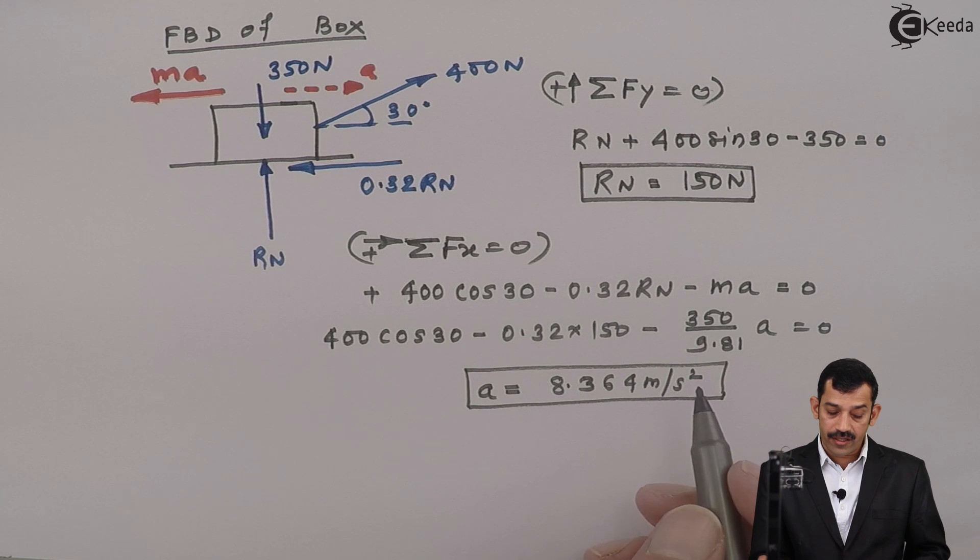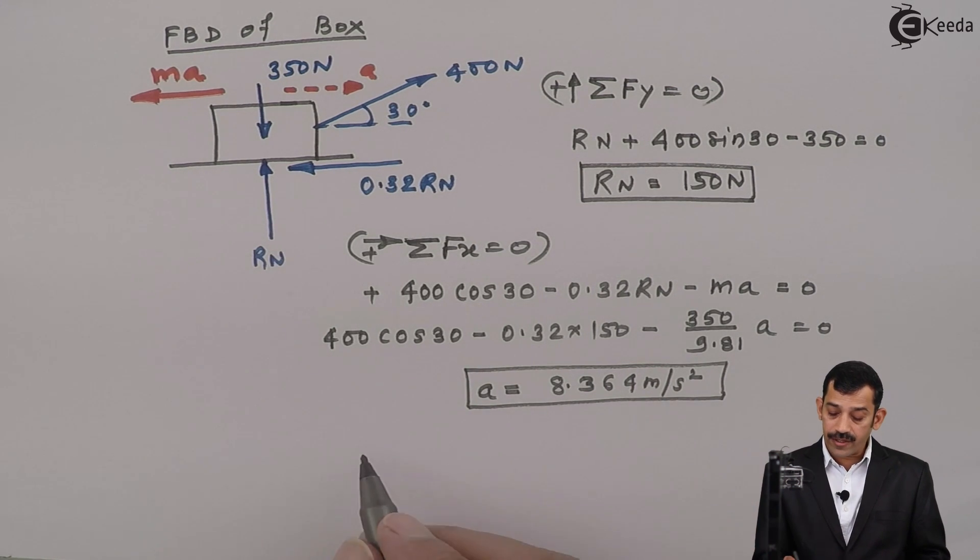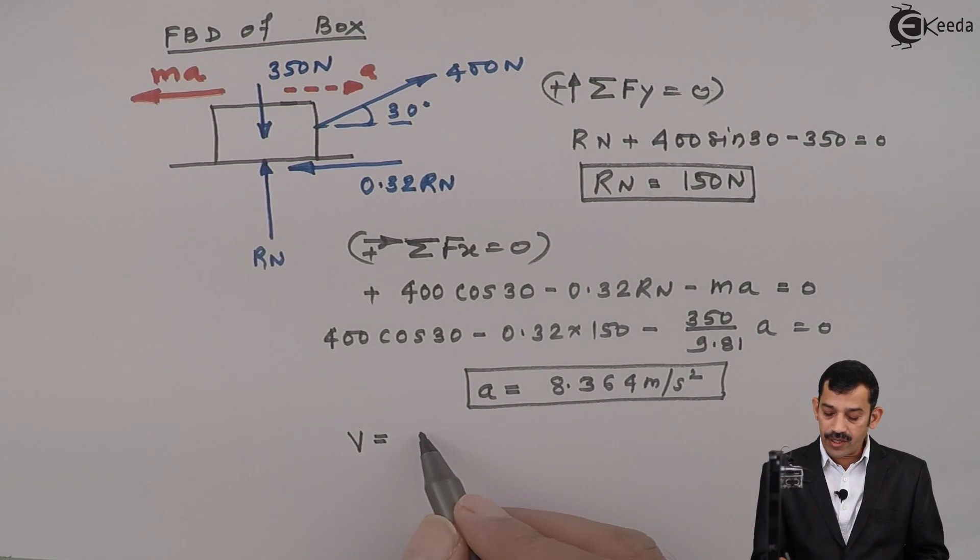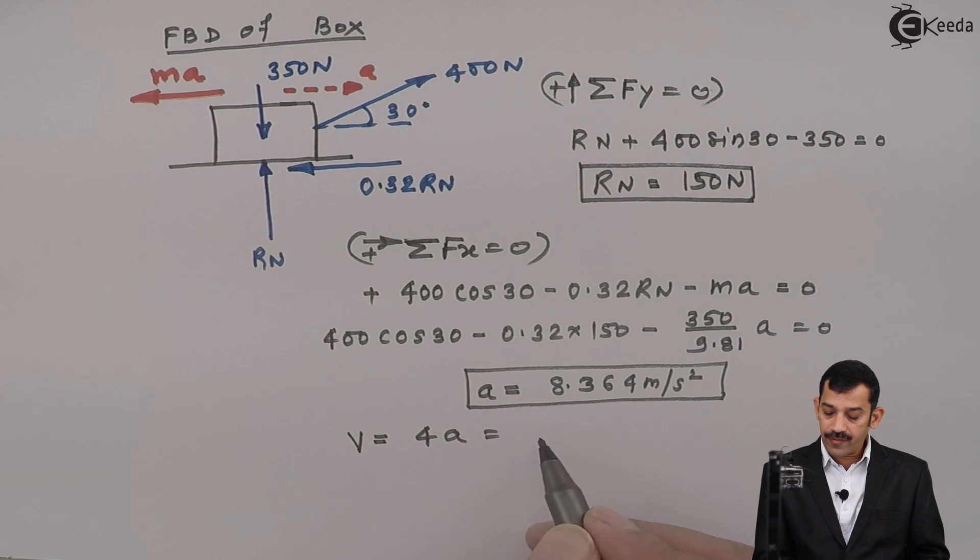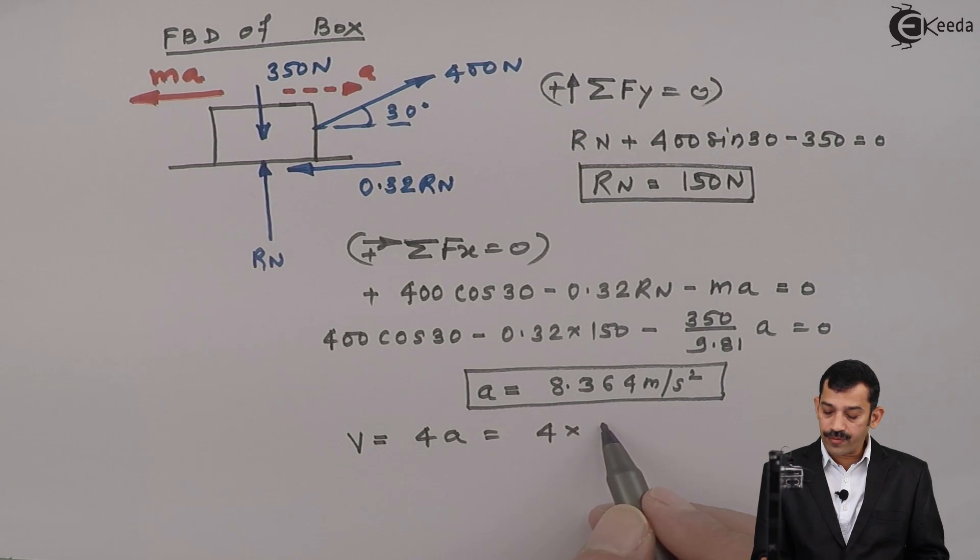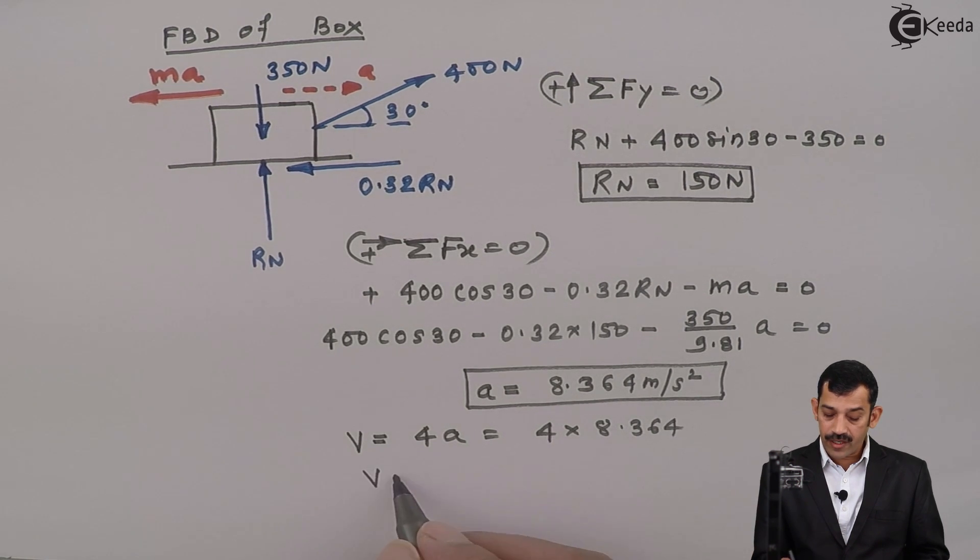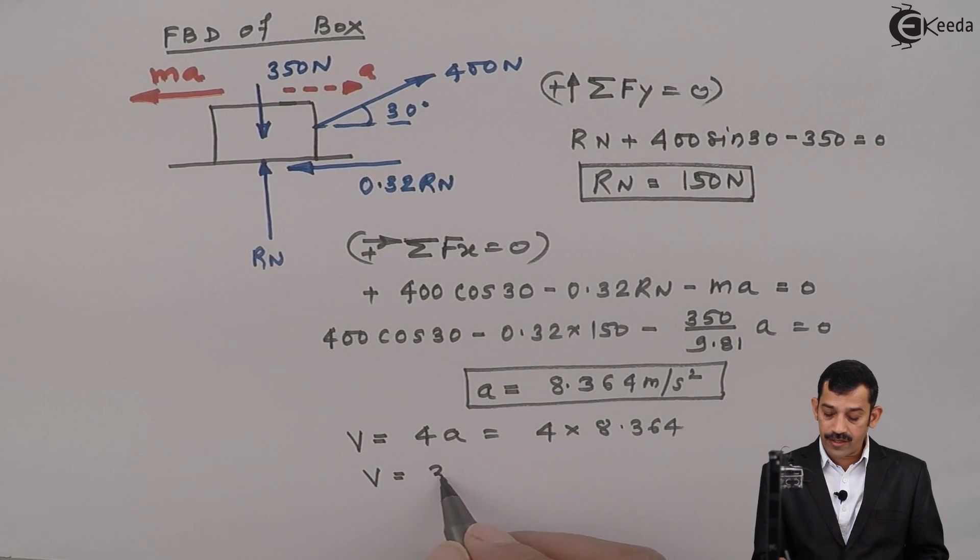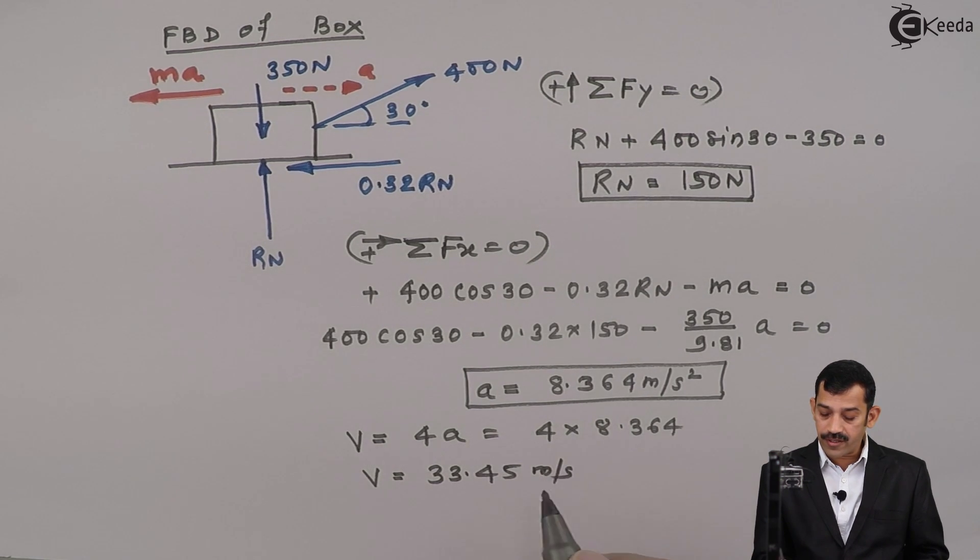Using this acceleration, if you will find out what is the velocity, that V you are written as what? U plus AT, where U is 0 and A into T, that means 4 times A, which is equal to 4 into 8.364 meters per second square. That means what is the velocity of the box is 33.45 meters per second.